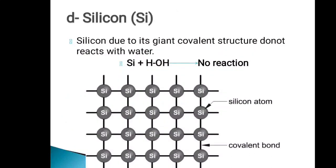Now we move towards silicon, the fourth member of period 3. Silicon, due to its giant covalent structure, does not react with water. Silicon exists in a giant network form where each silicon atom is attached with covalent bonds. This network of covalent bonds gives silicon a very giant molecular structure, and because of its covalent nature, silicon gives no reaction with water.